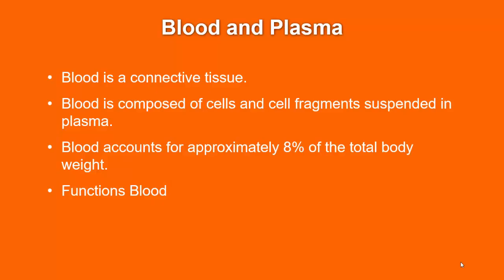Blood is a connective tissue composed of cells and cell fragments suspended in plasma. Approximately 8% of the total body weight — around 5 to 6 liters — makes up the blood. The primary functions of blood include supplying oxygen and nutrients to the cells, transporting carbon dioxide and nitrogenous waste from tissues to the lungs and kidneys where waste is removed from the body, and carrying hormones from the endocrine glands to the target tissues.